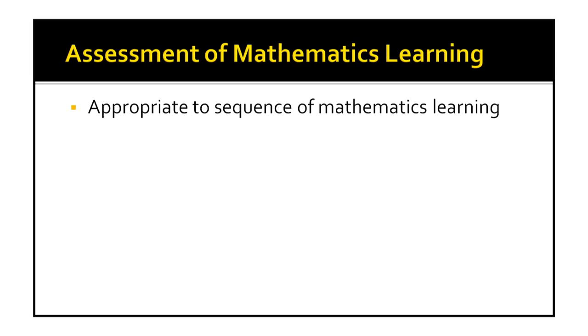Assessment should indicate what students need to learn — it should clearly inform students the areas in which they need to improve. There should be an appropriate sequence of mathematics learning. Just as each textbook has a sequence of chapters (chapter 1, chapter 2, chapter 3), all content in different subjects has a logical and psychological order. There are certain concepts which are to be learned first and which are to be learned later. Assessment should address this also — the concepts which are to be learned first should be assessed first. So there is a proper sequence to be followed while assessing mathematics learning.